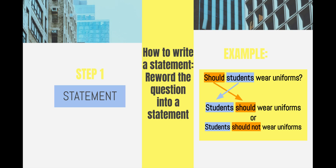Step one is to write a statement. To do that, you're going to reword the question into a statement. This is honestly the easiest part of an SREE. So if you look at my example, I have 'should students wear uniforms,' and I'm just going to switch around the word order into 'students should wear uniforms.' Or if you disagree with the question, just throw the word 'not' in there: 'students should not wear uniforms.'